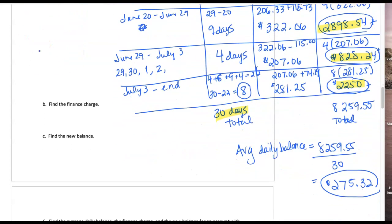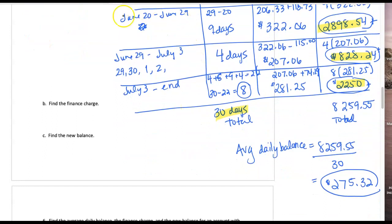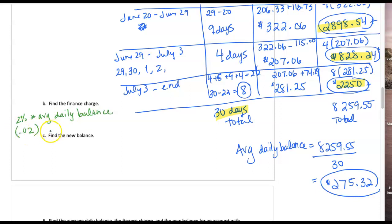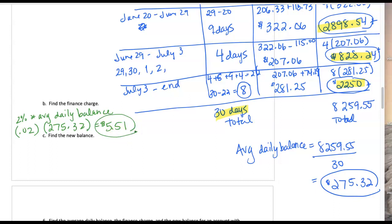To find the finance charge in part B, we're going to take the 2% times the average daily balance. We found above that 2% was 0.02, and we just calculated the average daily balance of $275.32. So our finance charge is going to be $5.51 for part B.